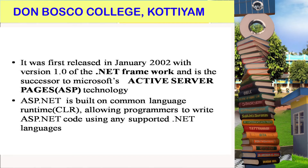The ASP.NET framework was first released in 2002 with version 1.0. ASP.NET supports what is called Active Server Pages technology — that is what ASP stands for. ASP.NET is built on the Common Language Runtime, which supports writing code in C# and VB.NET by default.